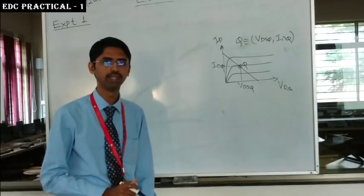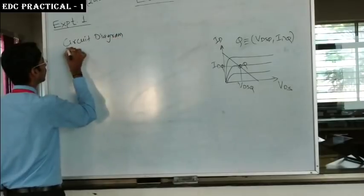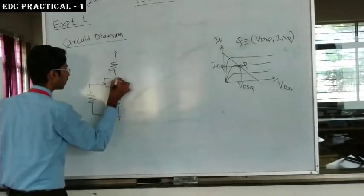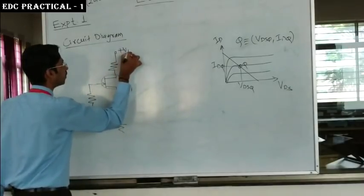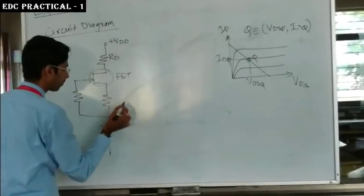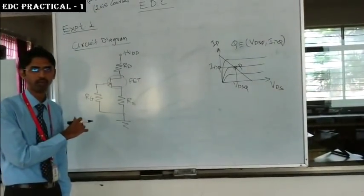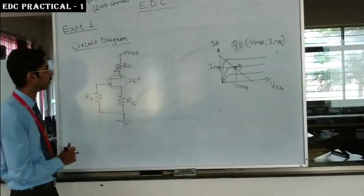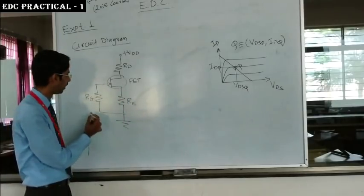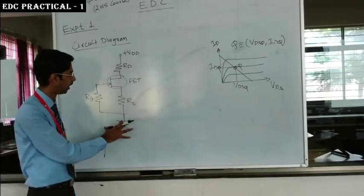We will first draw the circuit diagram of self biasing and then design it. The circuit has VDD, RD, and an N-channel enhancement type FET, along with RS and RG. RD is used to control ID — the drain current. RS gives negative feedback to the circuit. RG is the biasing resistor. We do not require an external biasing voltage, hence it is called self bias.